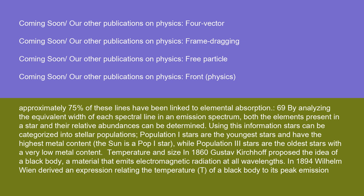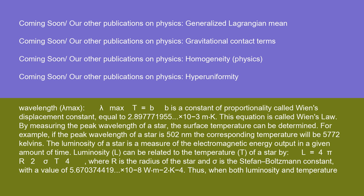Temperature and size: In 1860, Gustav Kirchhoff proposed the idea of a black body — a material that emits electromagnetic radiation at all wavelengths. In 1894, Wilhelm Wien derived an expression relating the temperature T of a black body to its peak emission wavelength: λ_max · T = b, where b is Wien's displacement constant, equal to 2.897771955 × 10⁻³ m·K. This equation is called Wien's law. By measuring the peak wavelength of a star, the surface temperature can be determined. For example, if the peak wavelength of a star is 502 nm, the corresponding temperature will be 5,772 kelvins.